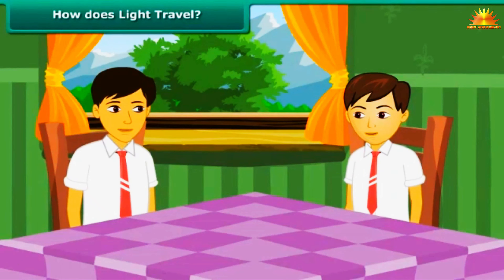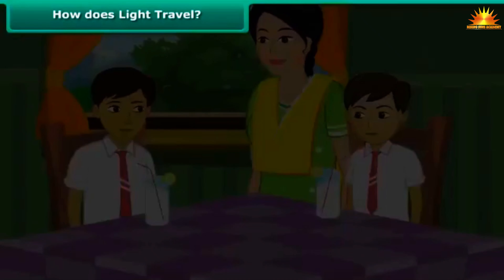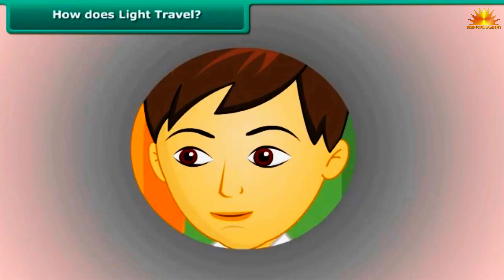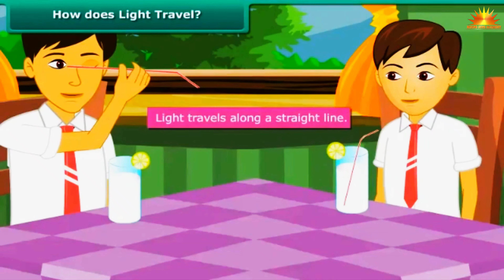You and your brother Ashish have just returned from school. Your mother gives both of you lemonade to drink. Your mischievous brother picks a straw out from the glass and tries to look at you through it. After a while, the thin straw bends. Now when Ashish tries to look at you through it, he is unsuccessful. This proves that light travels along a straight line.